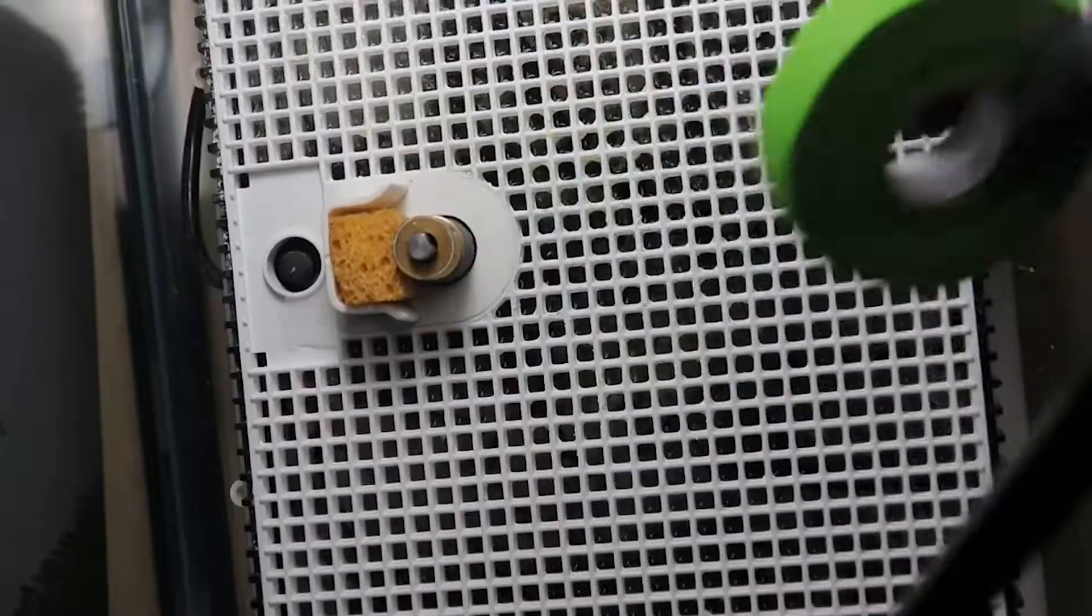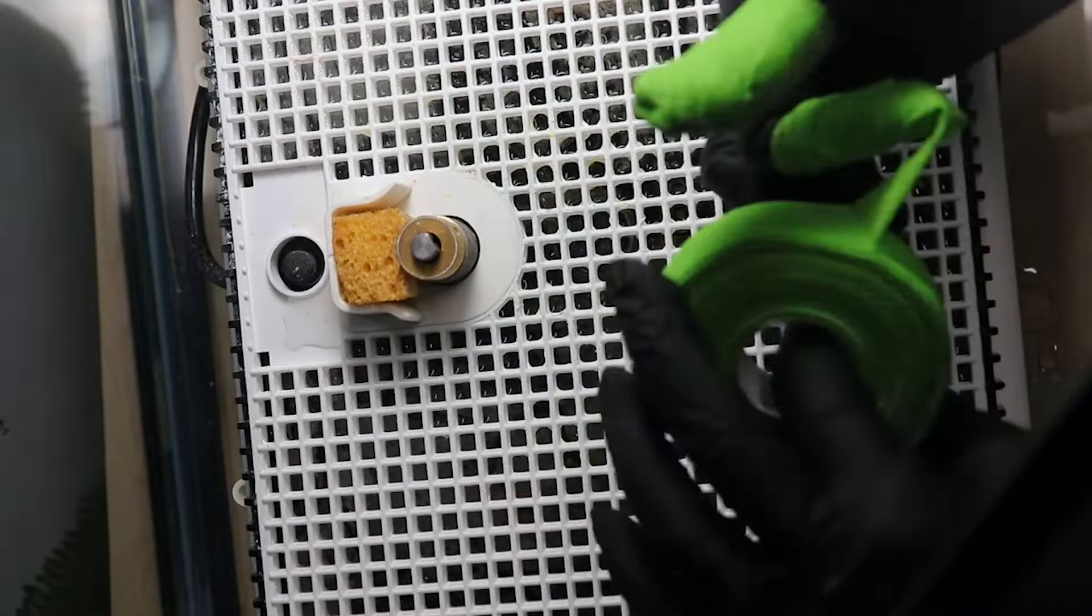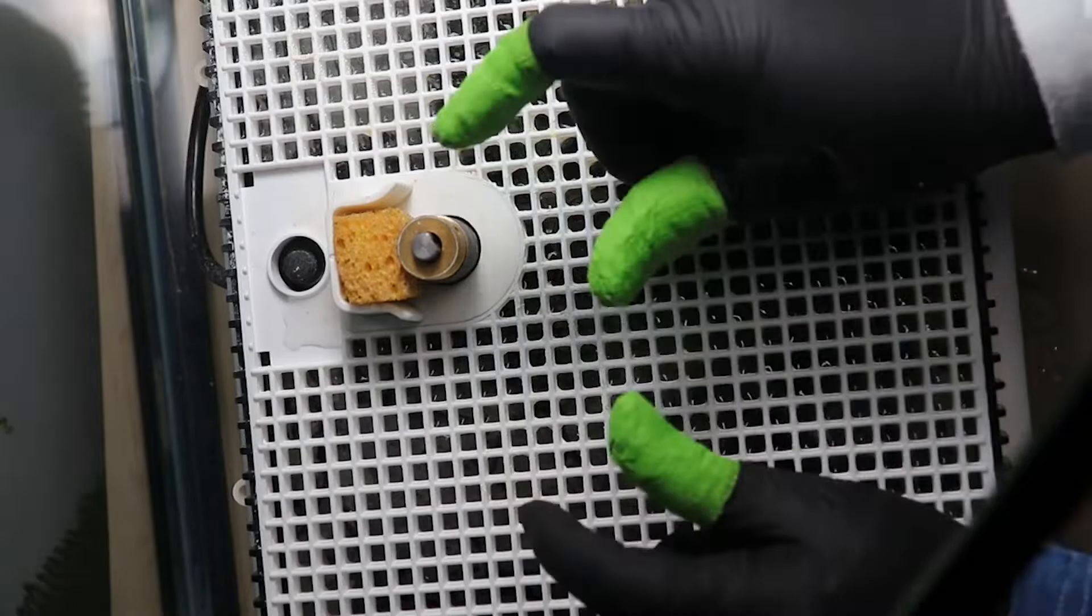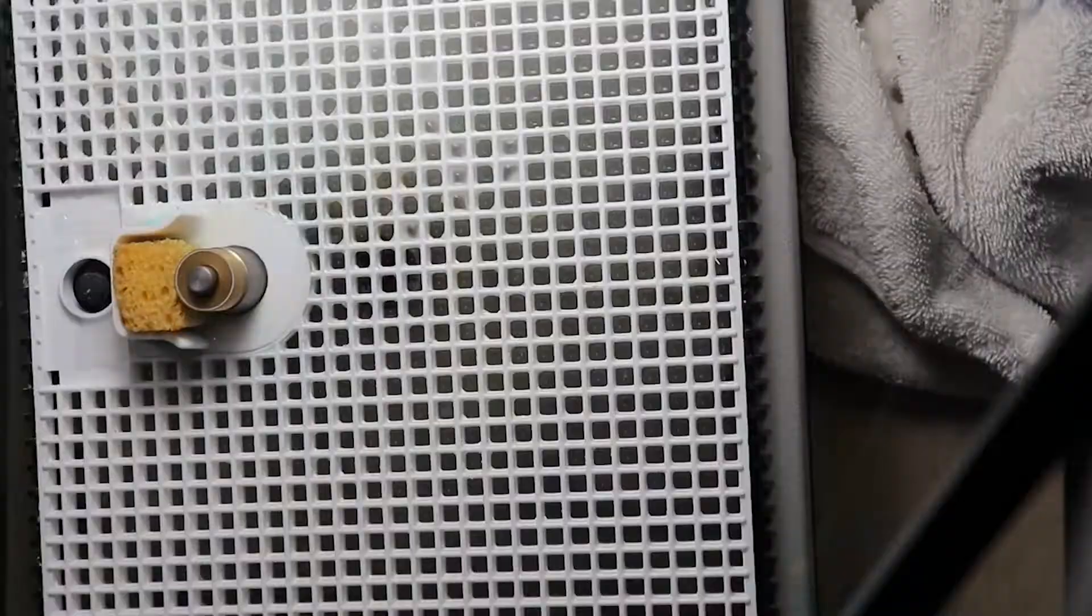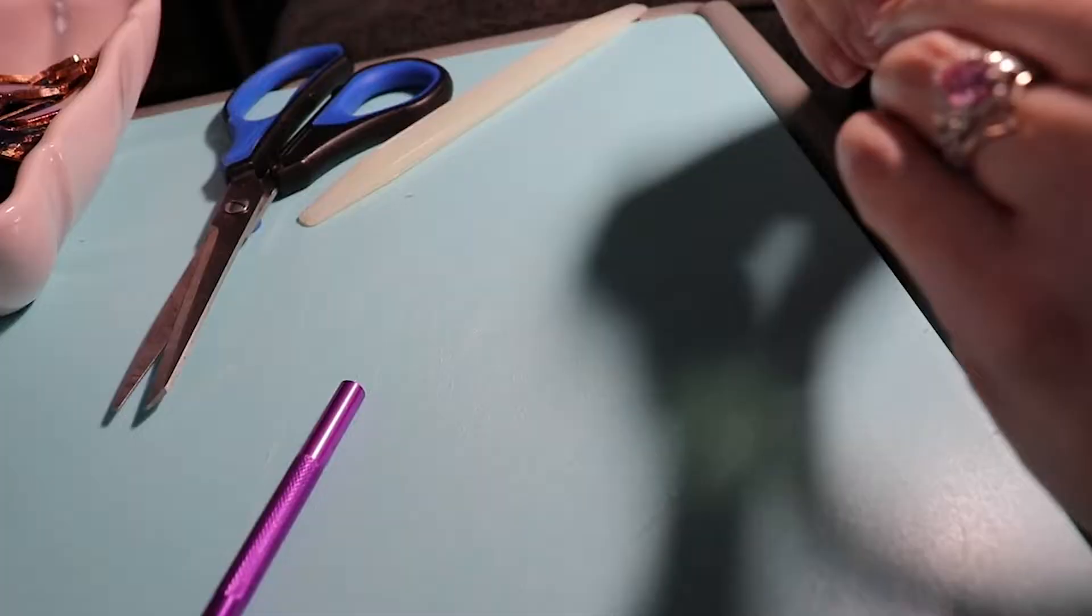The next step would be to grind your glass. Whenever you go and score it with your glass cutters and you snap off the pieces, any Sharpie that's left over, see like here, I'm taking all that Sharpie line off because ultimately that is the piece that I want. That's going to have to match my stencil, which I have another copy of laying down.